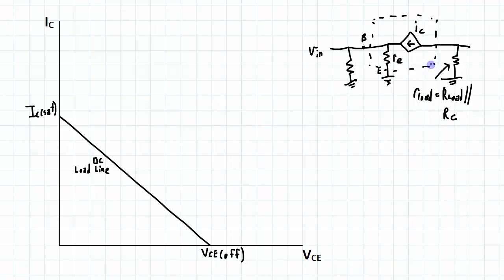Again, for the AC load line we are concerned with the IC value and the VCE value. This is the collector, so the VCE value is going to be the voltage across the collector emitter.